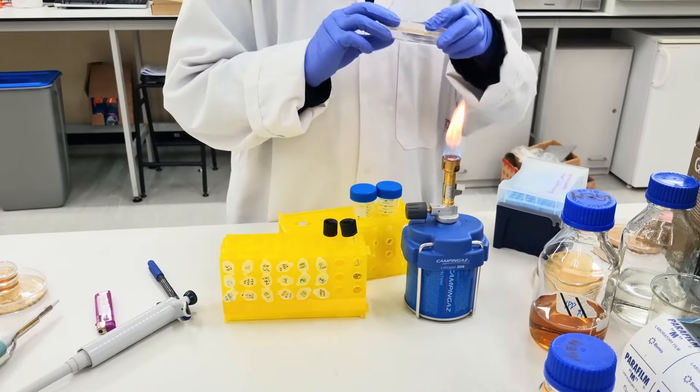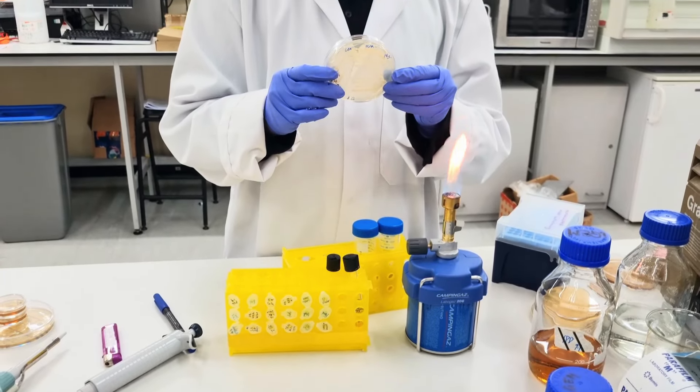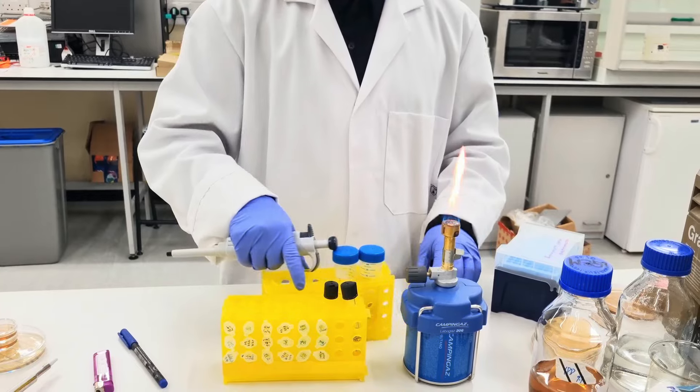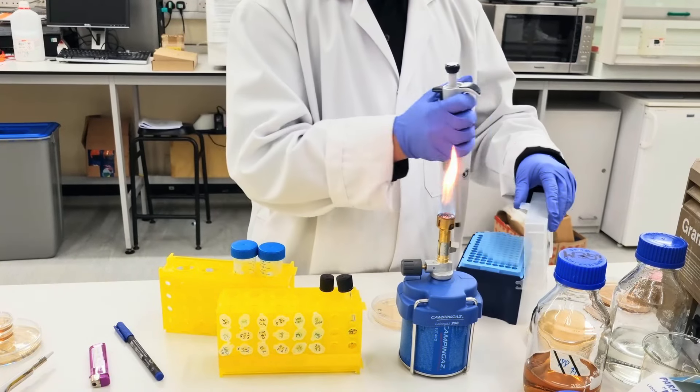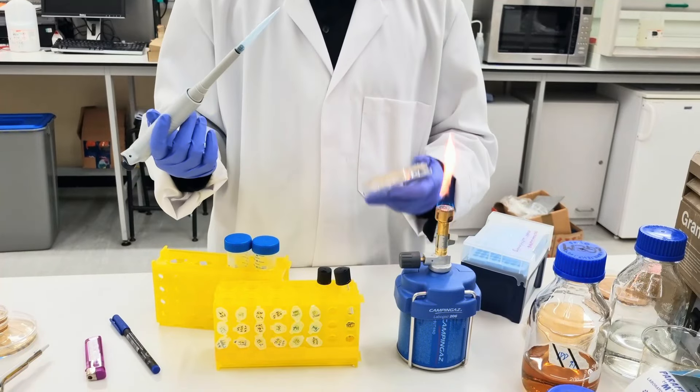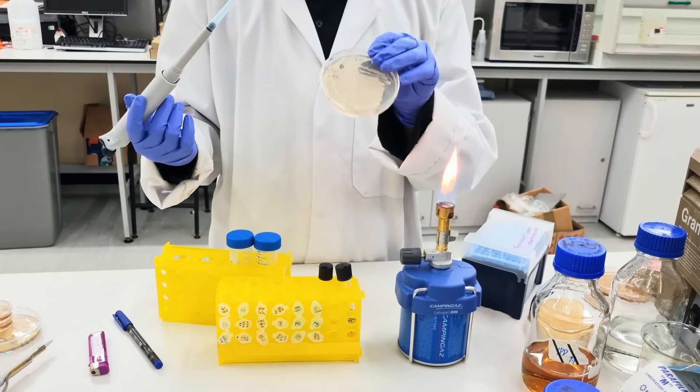And the next step is to get a fresh plate with the colonies you want to inoculate. Use one pipette tip to take one of the single colonies on plate.